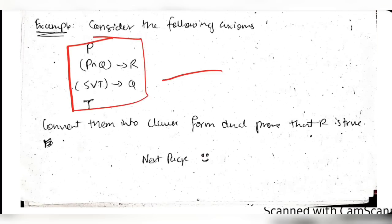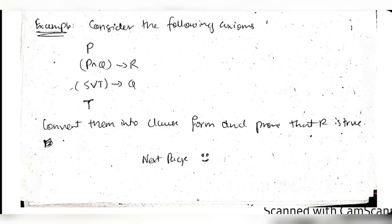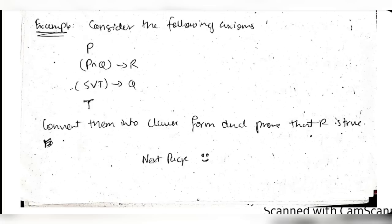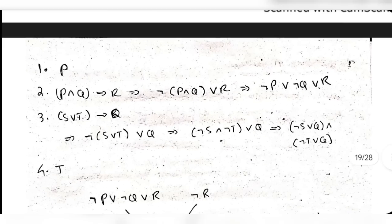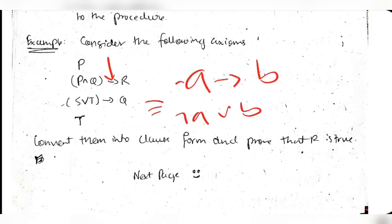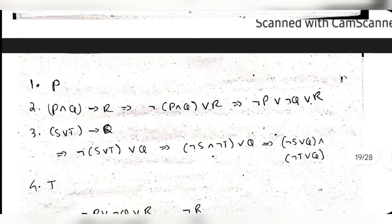Before applying resolution, you need to convert statements into clause form. Given: P, P ∧ Q → R, S ∨ T → Q, and T. The task is to convert these into clause form and prove that R is true. Clause form conversion: to remove implication, A → B is equivalently written as ¬A ∨ B. These two forms are equivalent - wherever you see A implies B you convert it to not-A or B.